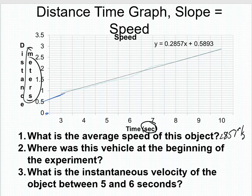Where was this vehicle at the beginning of the experiment? If you guys remember from algebra, the b tells us the starting point. So where was the vehicle at the beginning of the experiment? It was at the 0.5893 meter mark. The reason I know it's meters is because the y-axis is in meters.